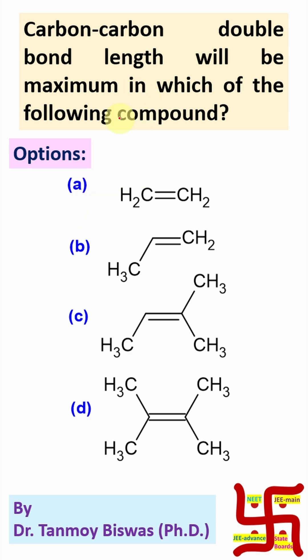Now, the question. Carbon-carbon double bond length will be maximum in which of the following compound? Now, double bond length. Generally, we have studied that double bond length is nearly 1.34 angstrom. But why the double bond length will change in this compound?